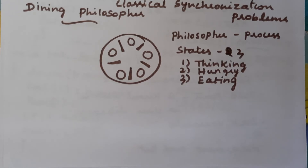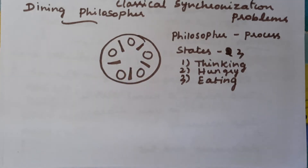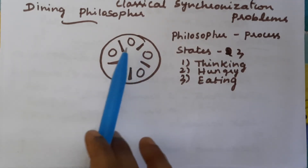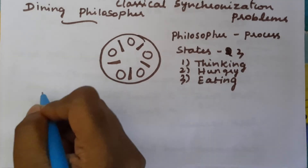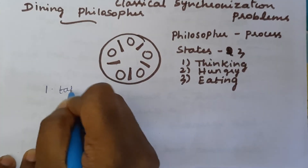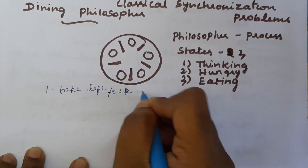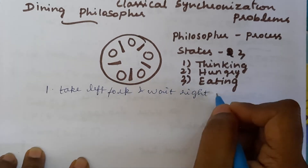The first solution: if any philosopher feels hungry, he can take the left fork and wait for the right fork. So the first solution is: take the left fork and wait for the right fork. If the right fork is not available, he will wait.